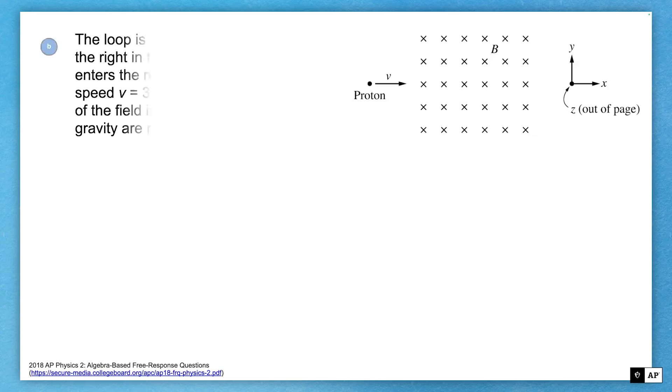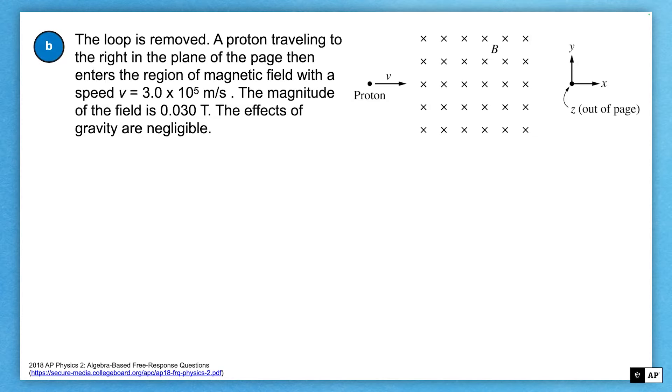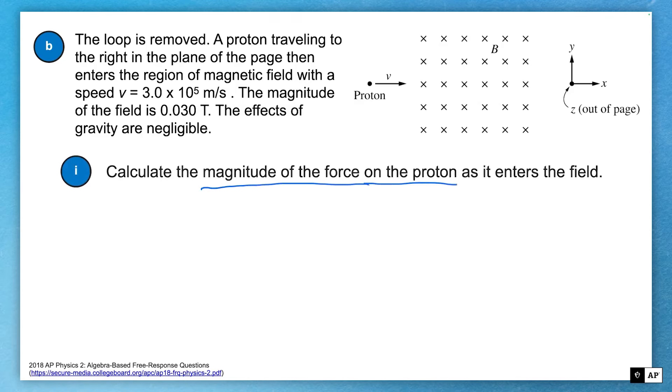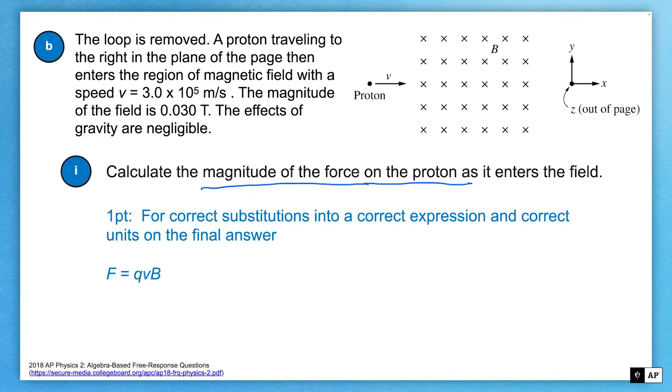Whoa. Switcheroo. This happens sometimes in these longer Physics 2 free response questions. It's still talking about a magnetic field, but now instead of a conducting loop going into it, there's a proton going into it. So there's a slight topic shift. Now instead of a loop, there's a single charged particle. And then it says, what is the magnitude of the force on the proton? So I know my equation for the force on a moving charged particle in the magnetic field is QVB. And so my equation correctly substitution into the correct expression. And that correct expression, of course, is QVB. They give us the V is three times 10 to the fifth meters per second. They give us the B. So the V is 3 times 10 to the fifth meters per second. The B is 0.03 Tesla.